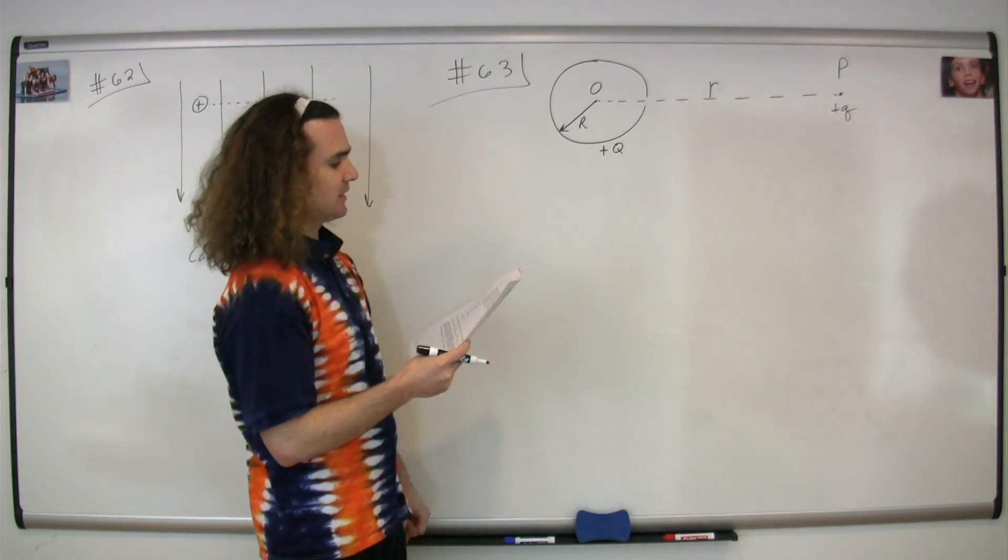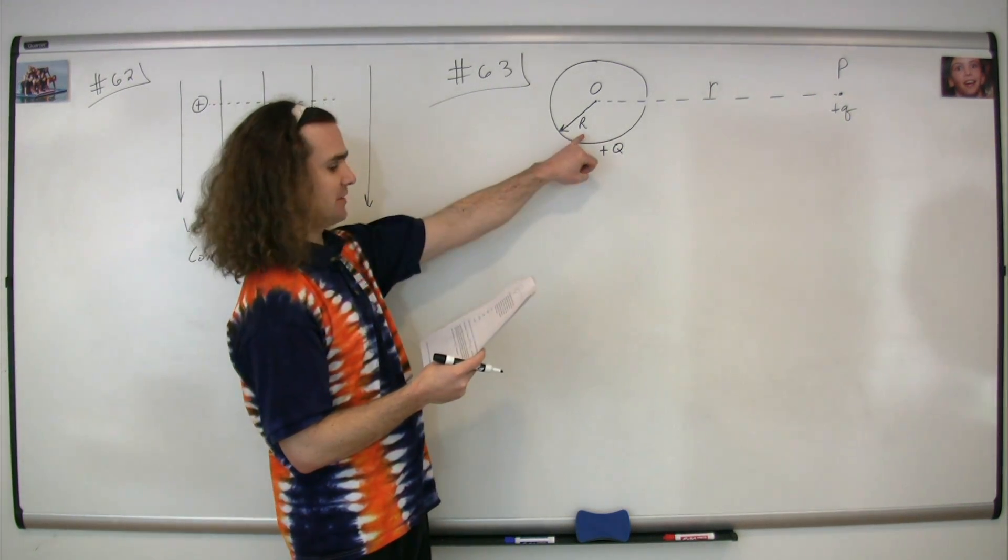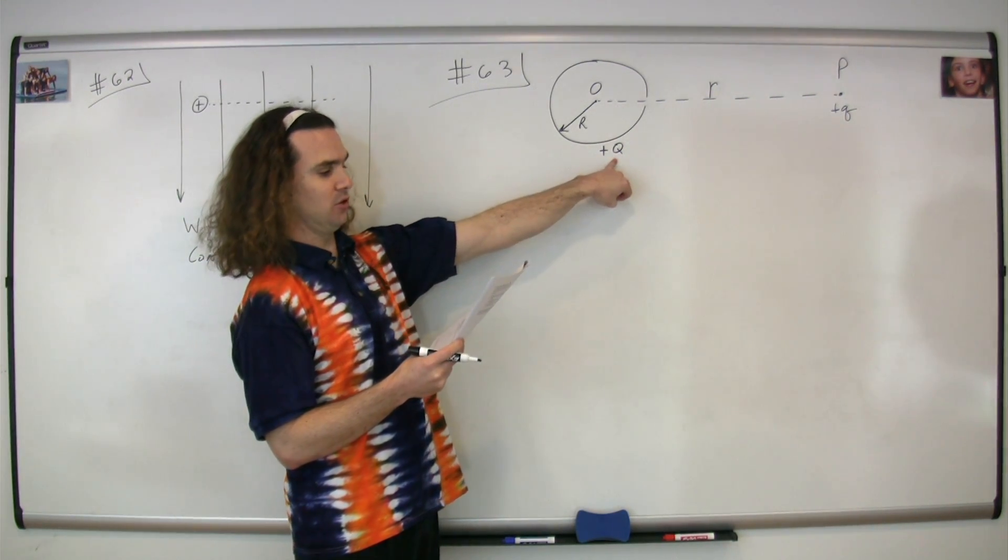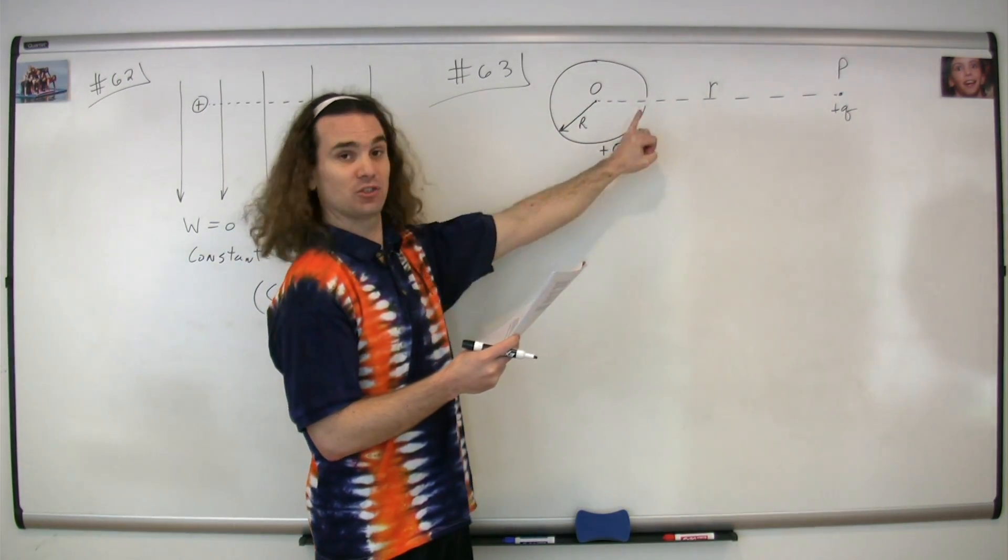Problem number 63. A non-conductive hollow sphere of radius capital R carries a large charge positive capital Q uniformly distributed throughout its surface.